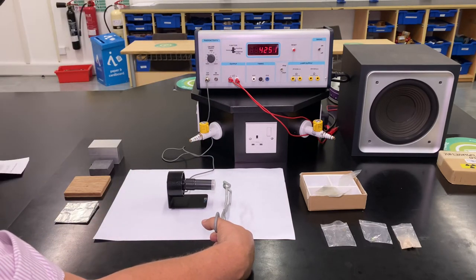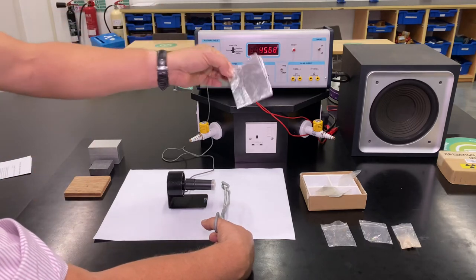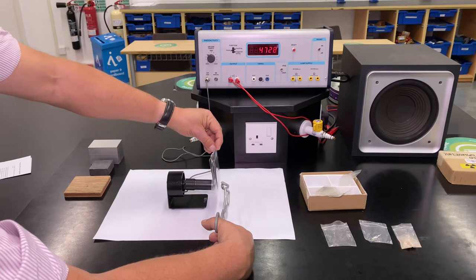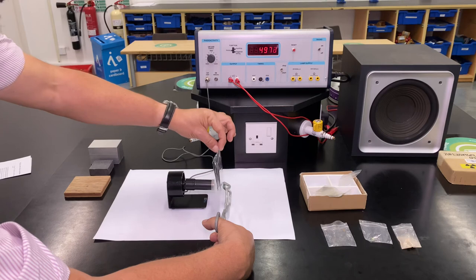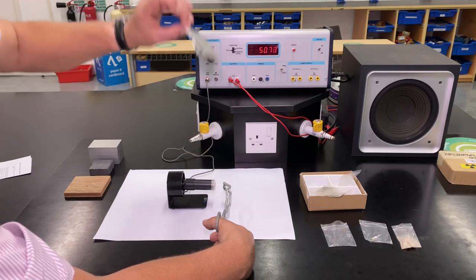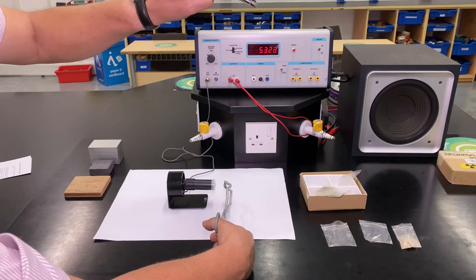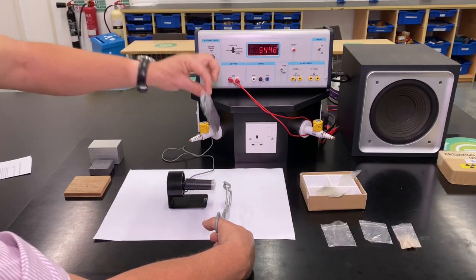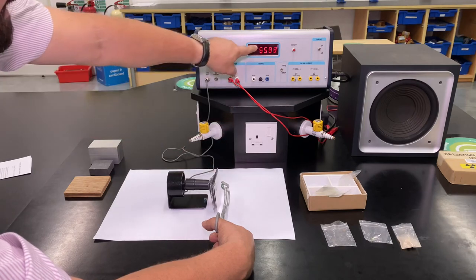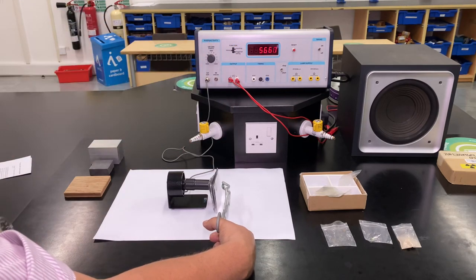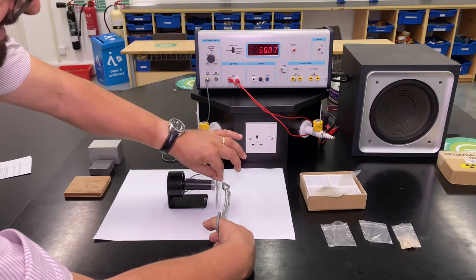So definitely not alpha. What about beta? A few sheets of aluminum. Does drop a little bit, doesn't it? That's enough aluminum to pretty much stop most of the beta particles. So the fact that it doesn't drop to zero or close to zero...